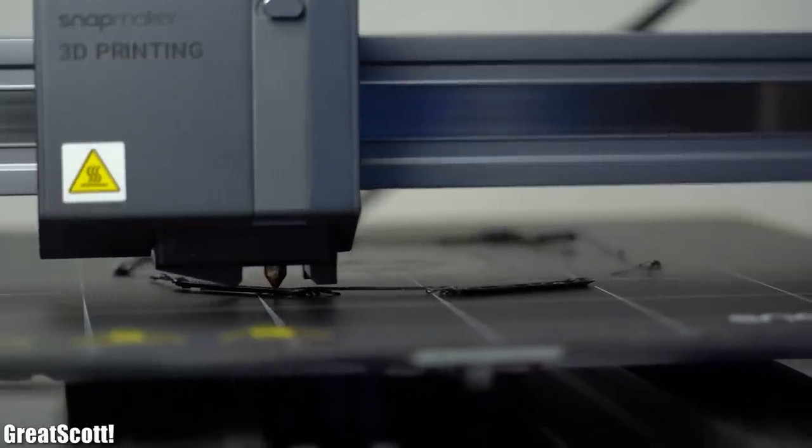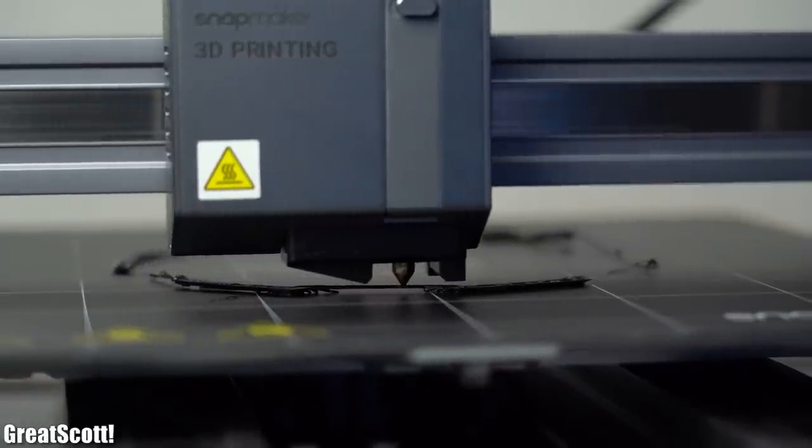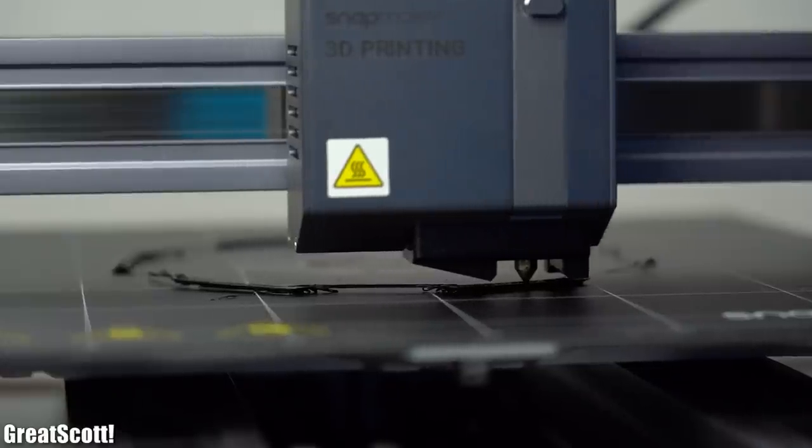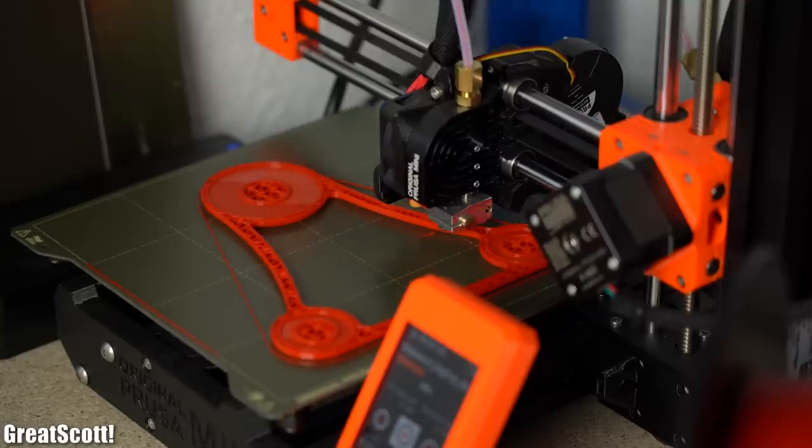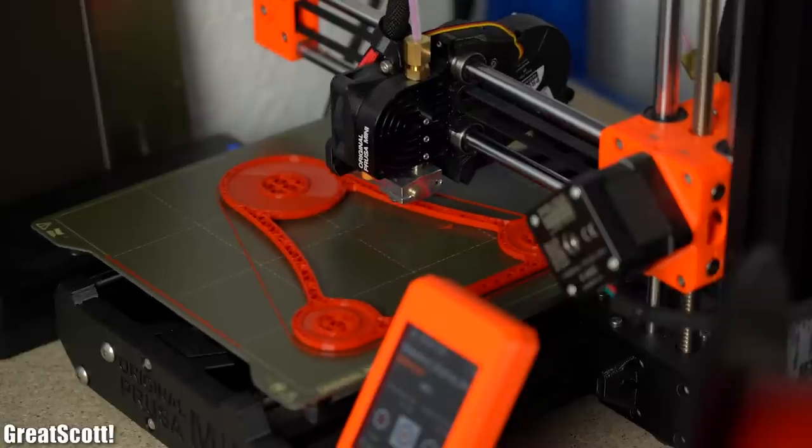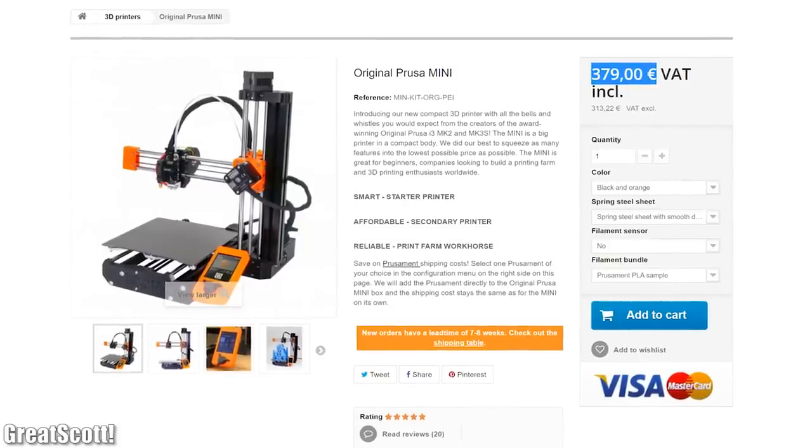So in my opinion the Snapmaker is great as a 3D printer if you need large prints but for everything small I would highly recommend the Prusa Mini since that one is also more budget friendly.